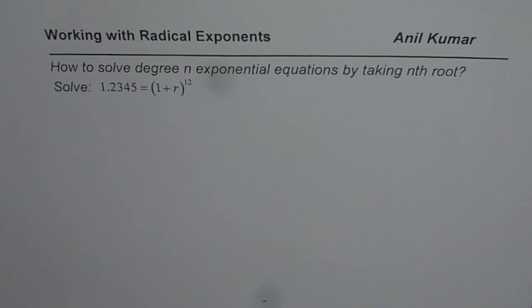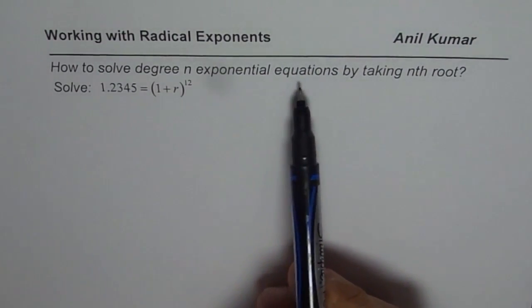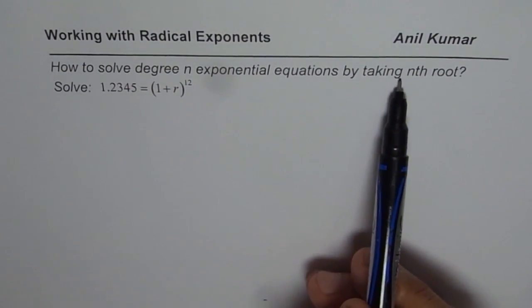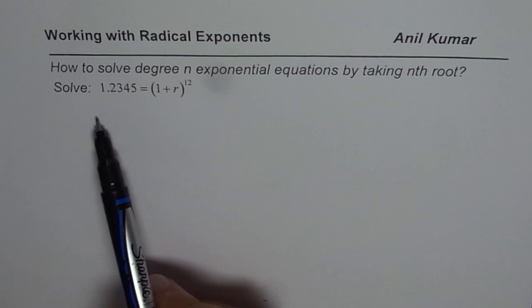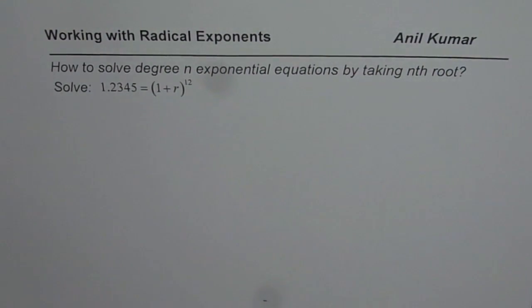I am Anil Kumar sharing with you a thinking and communication question on working with radical exponents. The question here is, how to solve degree n exponential equations by taking nth root? You need to solve 1.2345 equals to 1 plus r to the power of 12. You can pause the video, answer the question and then look into my solution.